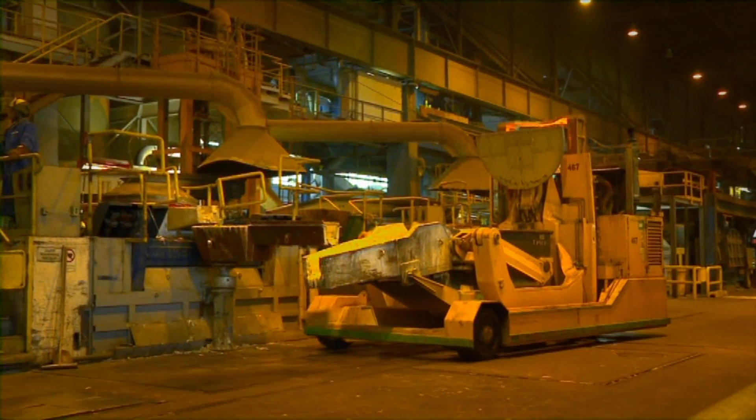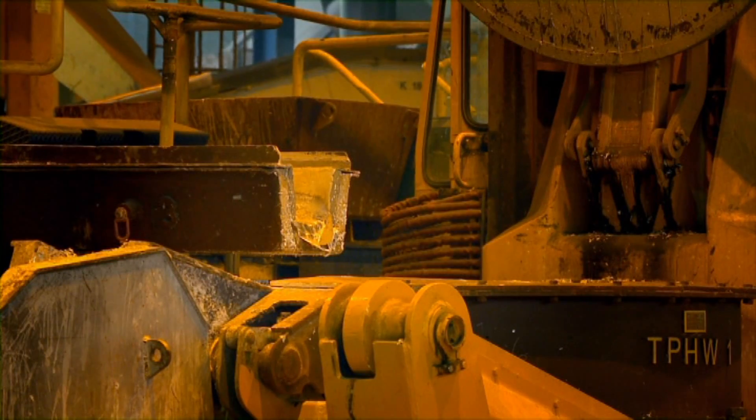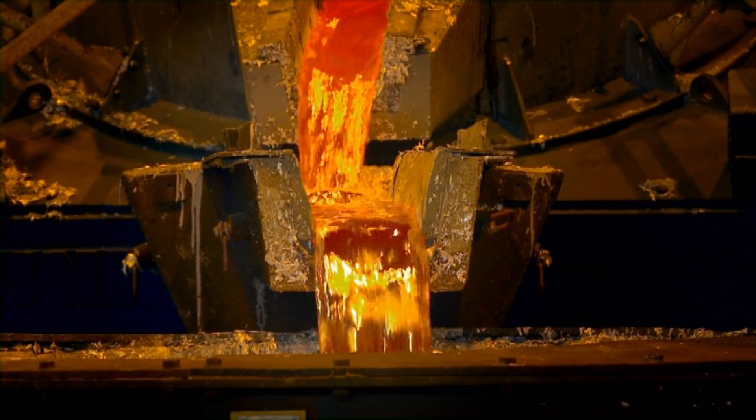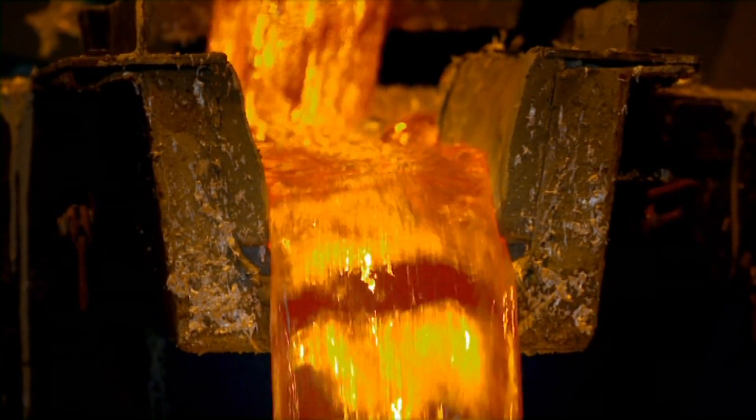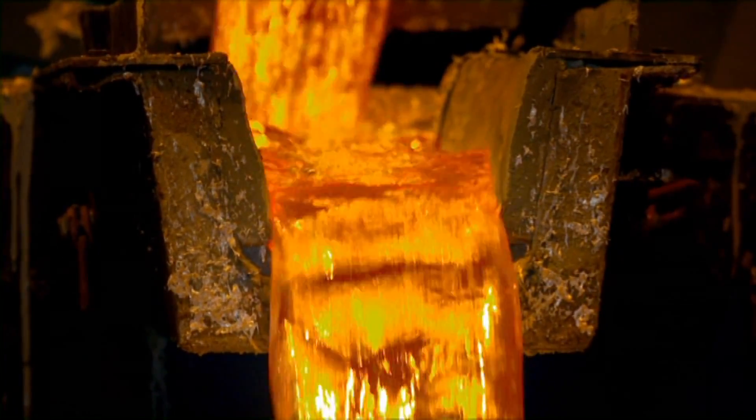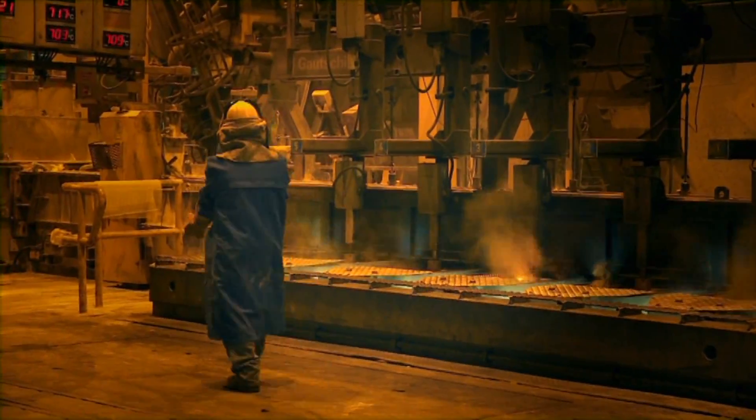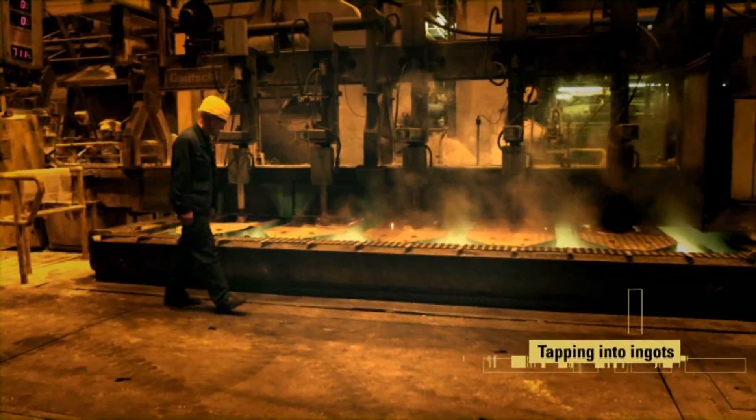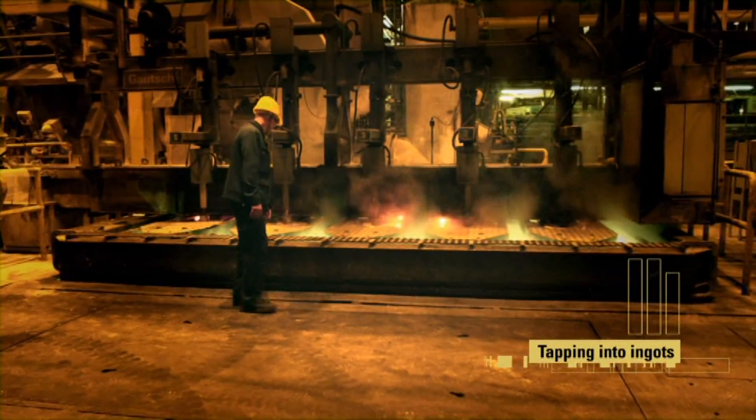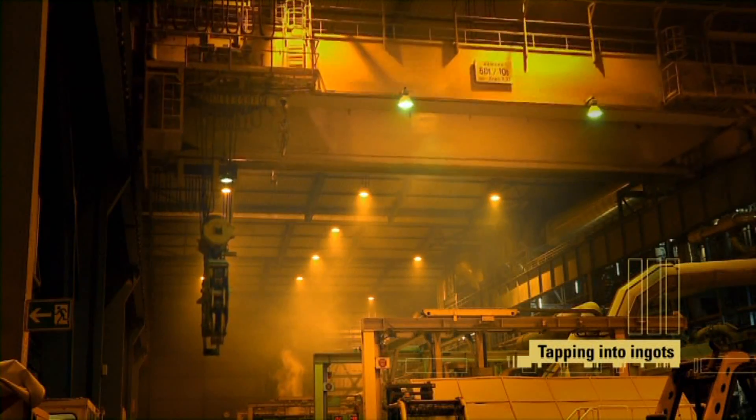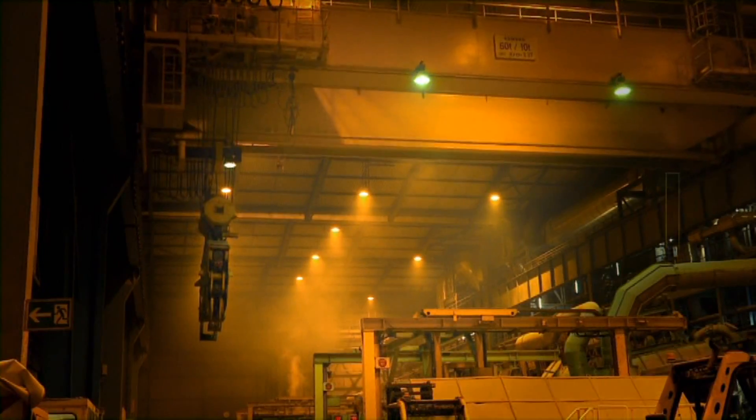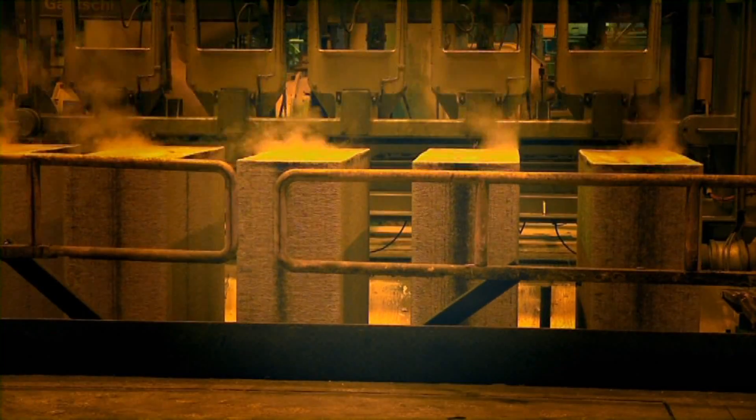The molten aluminum which is siphoned off is now basically aluminum in its purest form. Being liquid and at 700 degrees Celsius it can be poured into any shape. In this case it is tapped into huge ingots of nine meters long weighing 30 tons and more.